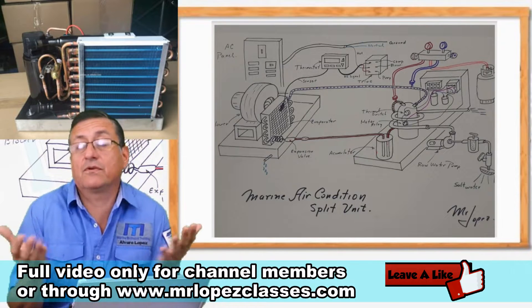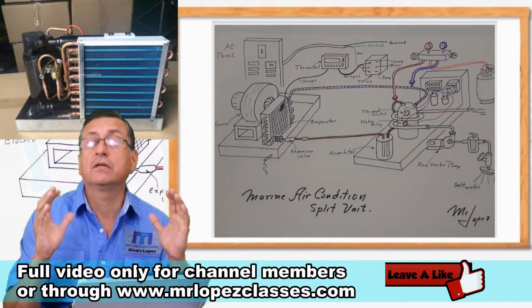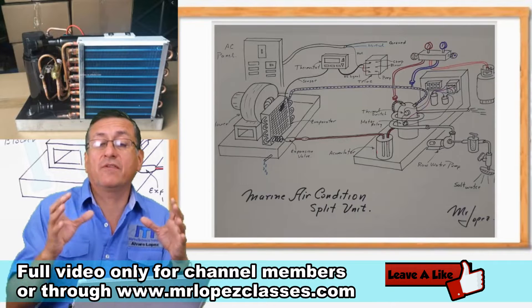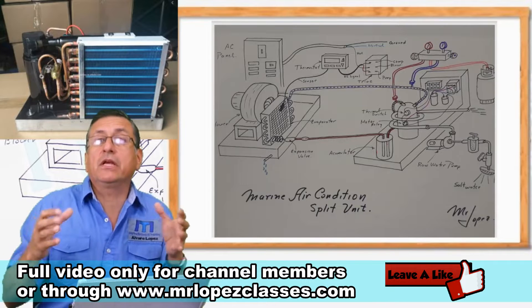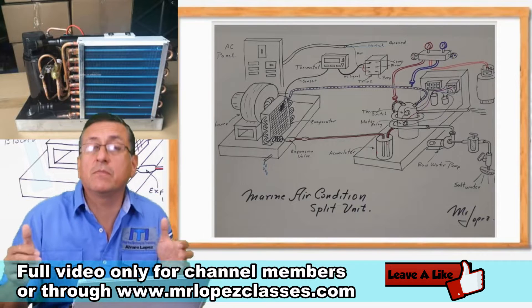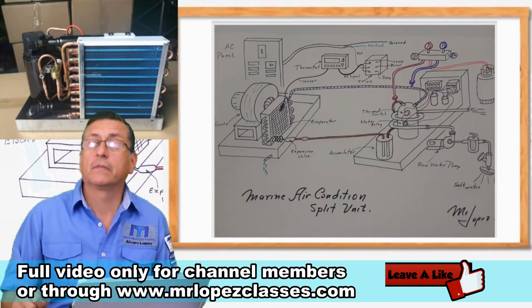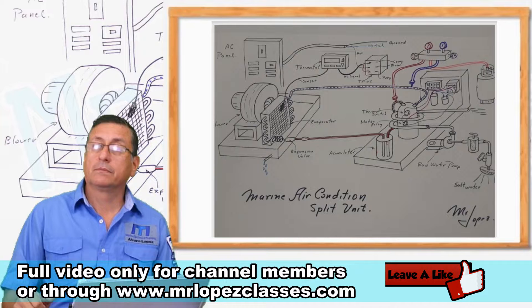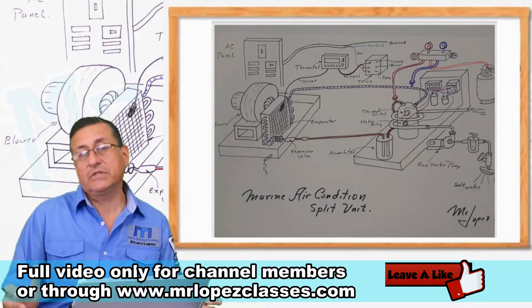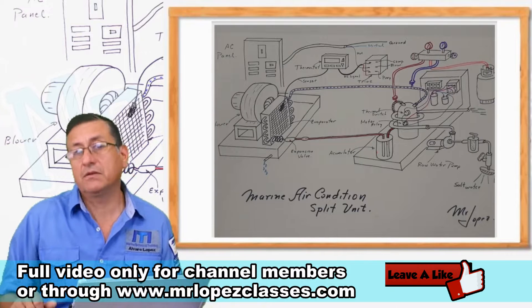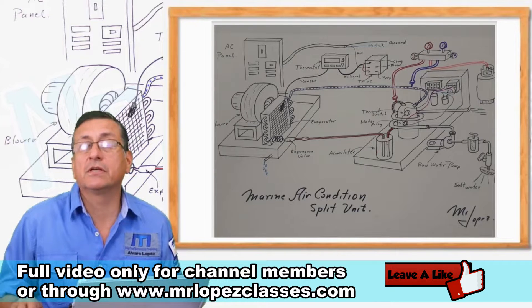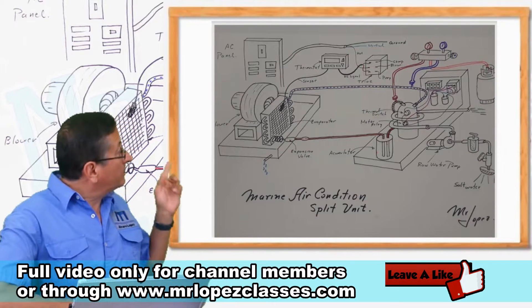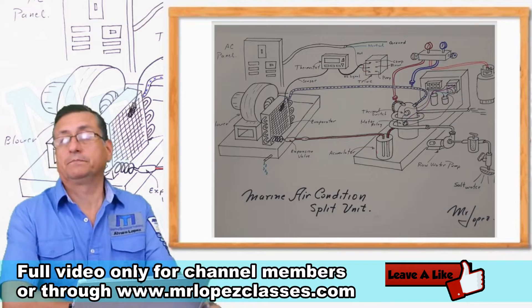Those are self-contained units. The compressor and the evaporator are pretty close, in the same compartment. This is a good advantage. That's the inconvenience of the split units.